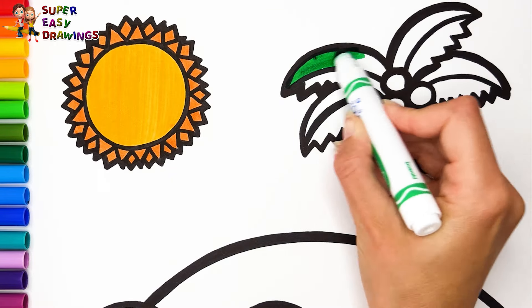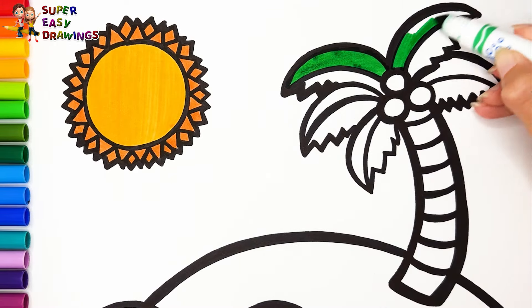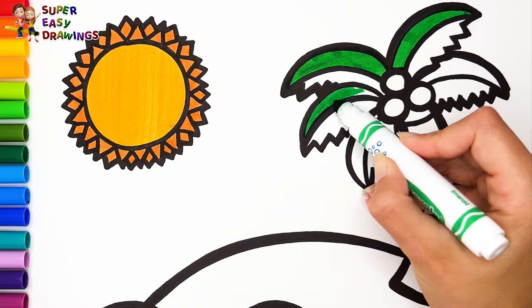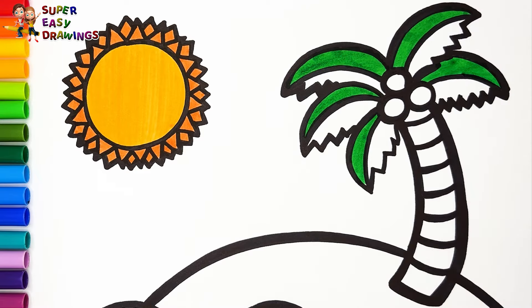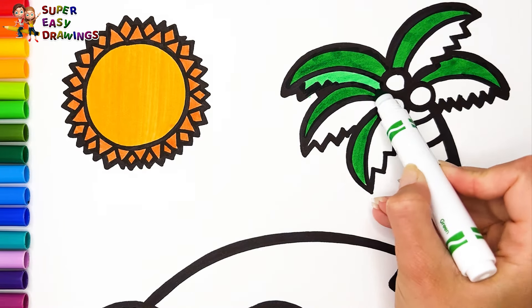I'm going to use two different shades of green for the leaves. I start with dark green. Then I use light green.